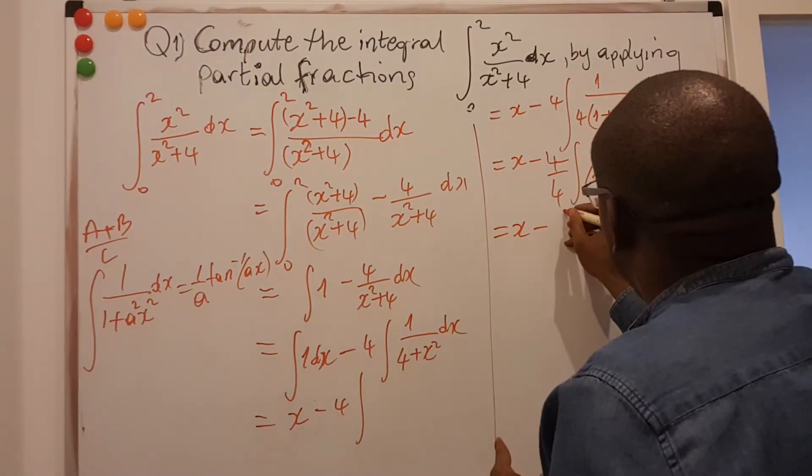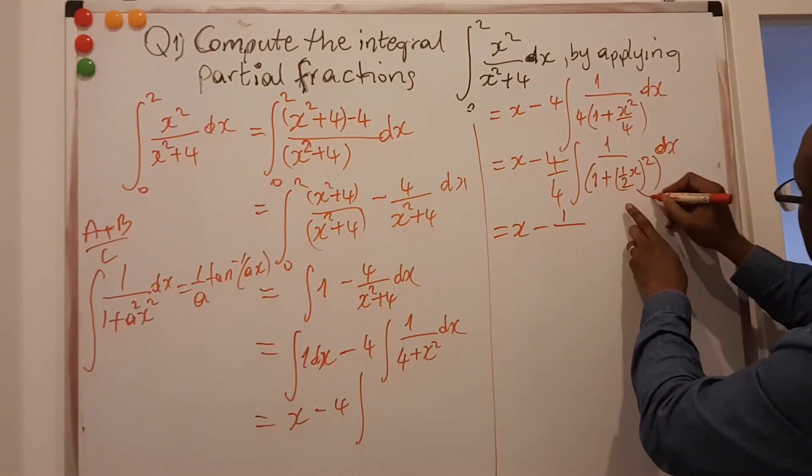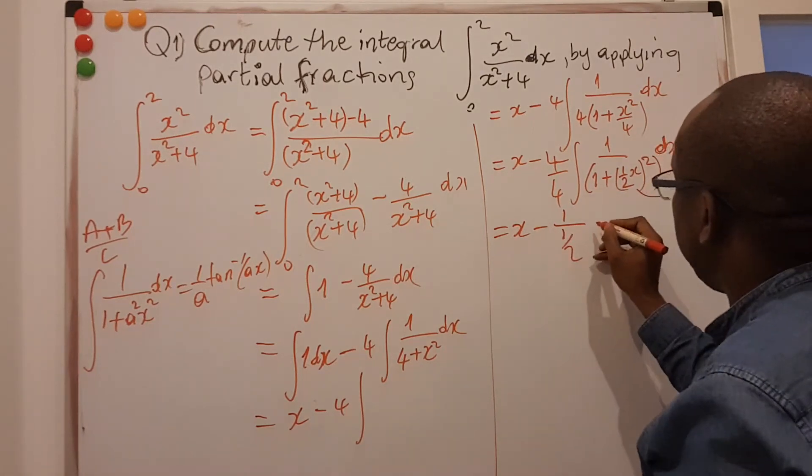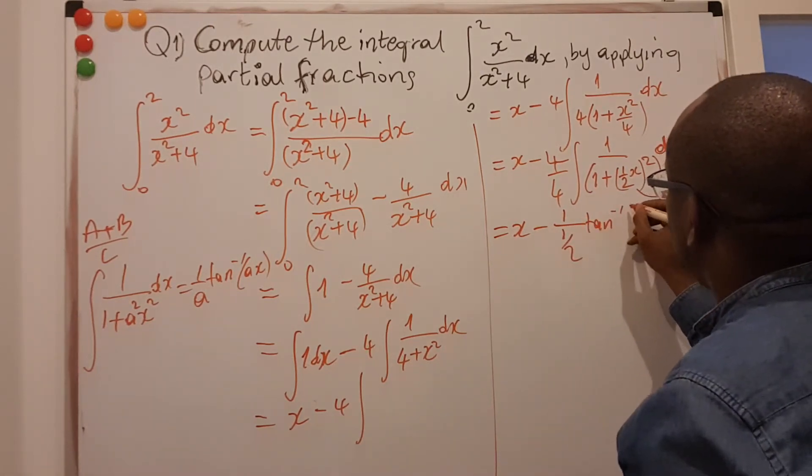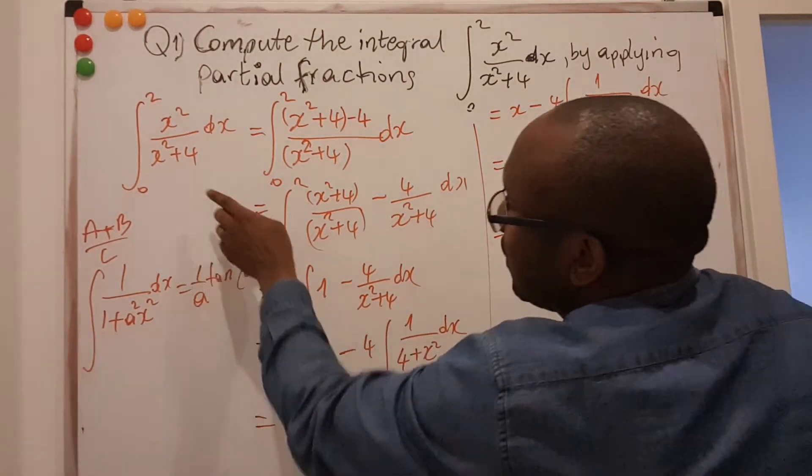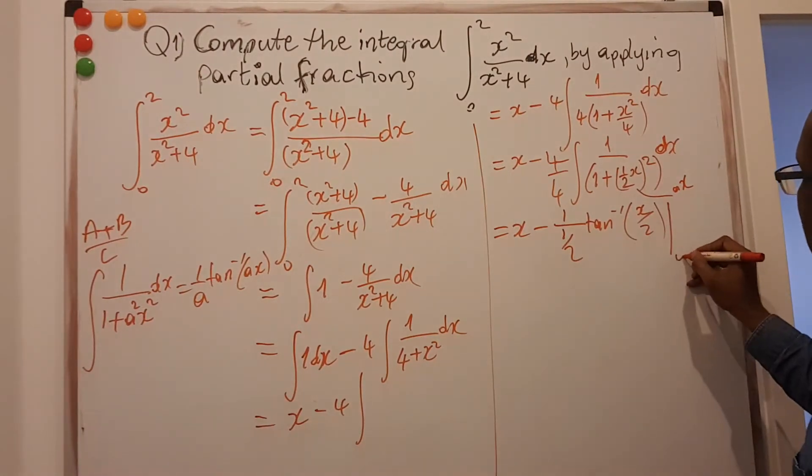This is, as we already said, this is 1 divided by a. a is half. If you compare this, this is ax. So a is half. So this is divided by half. The tan inverse of x on 2. a is half, and that's x.